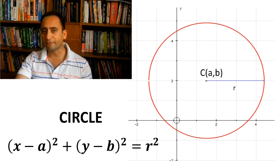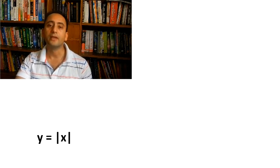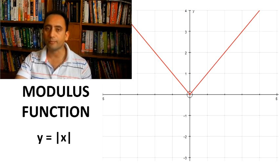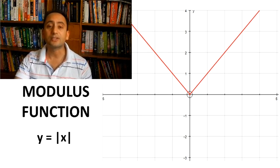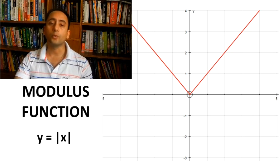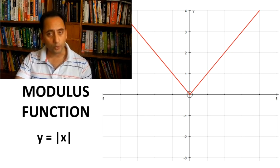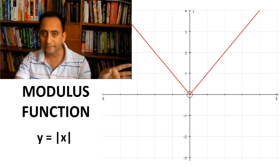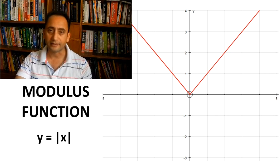Next is another function we will be discussing in this chapter: y = |x|. For the modulus function, y = x if x is positive and y = -x if x is negative. So the graph will only be in the first quadrant when x is positive and in the second quadrant when x is negative.